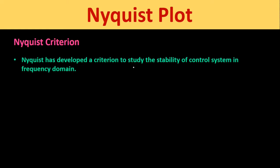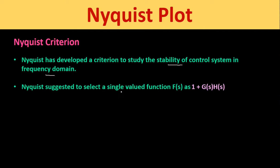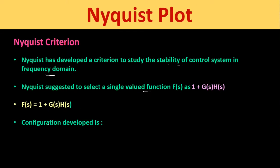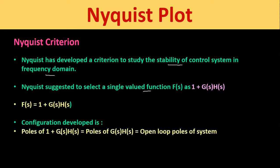Nyquist also suggested to select a single-valued function represented by F(s) as 1 + G(s)H(s). So F(s) = 1 + G(s)H(s). The configuration developed by Nyquist is: the poles of 1 + G(s)H(s) — this is called the characteristic equation — will be equal to the poles of G(s)H(s), which are the open-loop poles of the system.